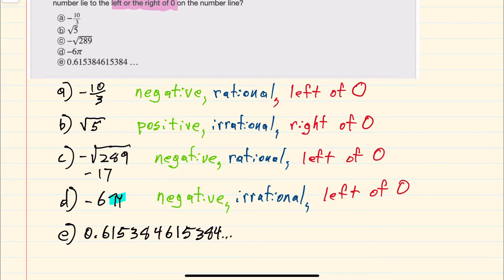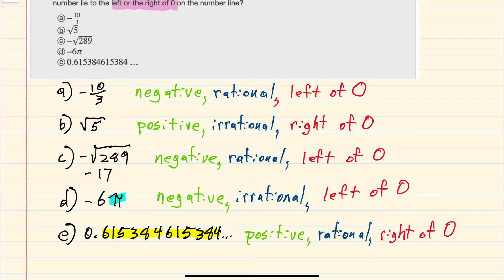Our next example is given here for E. Since there is no negative, this is positive. To determine if it's rational or irrational, I need to see if the decimals are repeating. I can see that 615384 repeats, meaning this is a repeating decimal, so it will be rational. As a positive number, it will be to the right of 0.